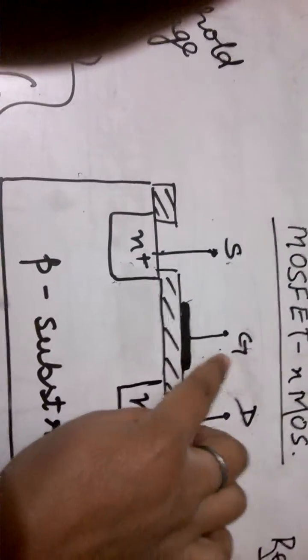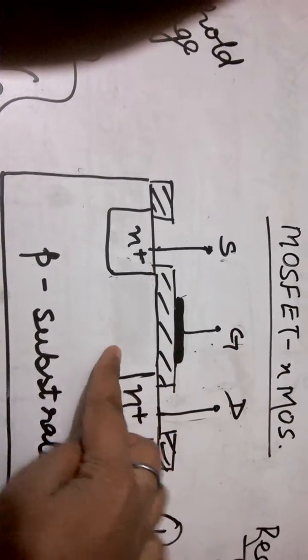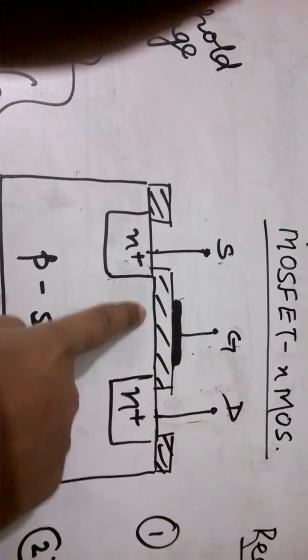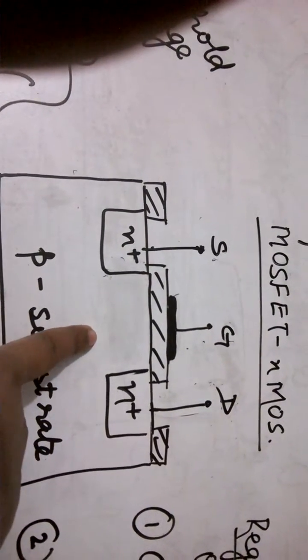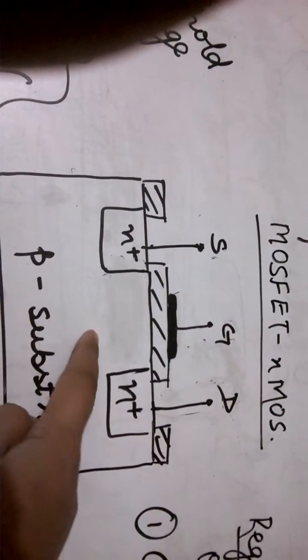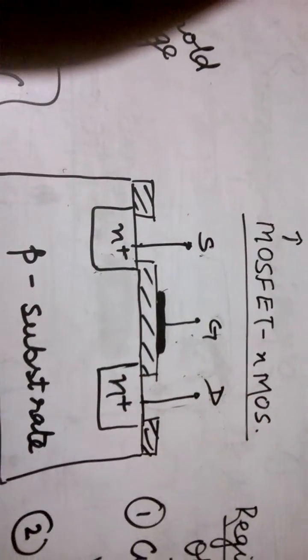Now when I start applying a small gate voltage some of the electrons are attracted and here a depletion region is formed. Since the holes are already present and these electrons, there is a recombination of the two and a depletion layer is formed. Again the drain current is zero.